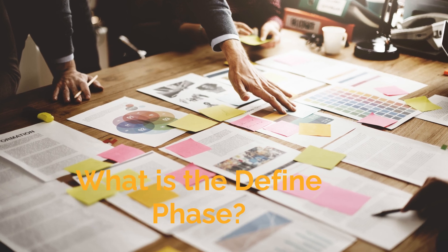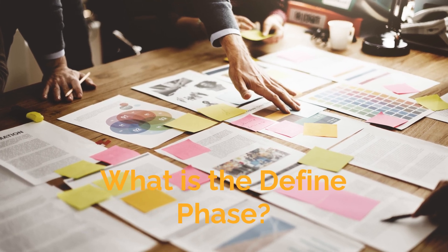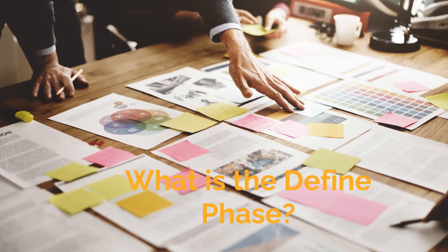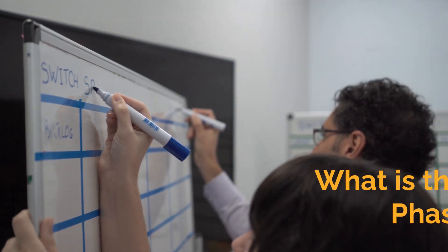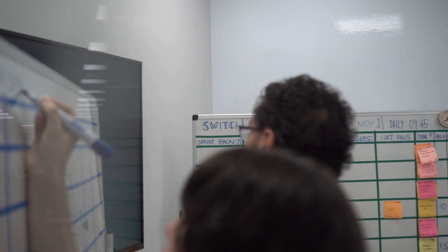The Define Phase is the first step in the DMAIC methodology, which stands for Define, Measure, Analyze, Improve, and Control. This phase sets the foundation for the entire project.